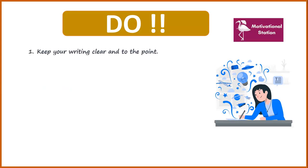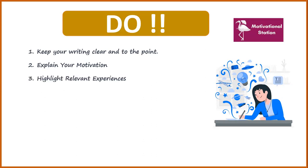In the next part, I will discuss what kind of things you must consider while writing your SOP. The first thing is to keep your writing clear and to the point. You don't need to add any words that look ambiguous. Please write clearly and to the point. The second one is it is very necessary to explain your motivation — why you are applying to that program, what is the motivation behind it, and have you ever experienced these kinds of things before in your life. The third one is you don't need to write all the experiences you have in your life — only highlight those experiences that are relevant to that particular program.